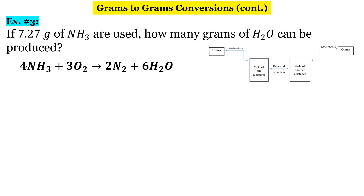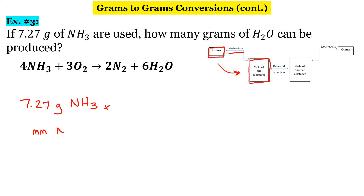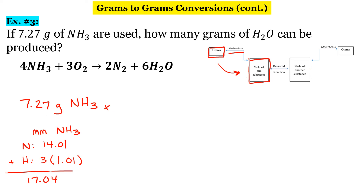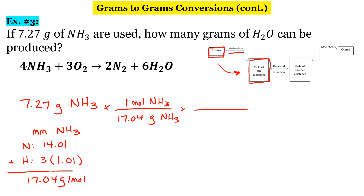Same type of thing — we're going grams to grams. Step one: write down what we're given — 7.27 grams of NH₃. We're going to use the molar mass to convert that to moles of NH₃. The molar mass of NH₃: nitrogen is 14.01, and hydrogen — there are three of them, each is 1.01. So 14.01 plus 3 times 1.01, I get 17.04 grams per mole. So 17.04 grams of NH₃ for every one mole of NH₃, and I can cross out my units of grams of NH₃.